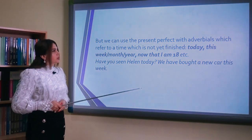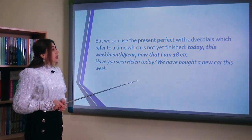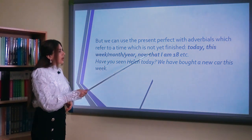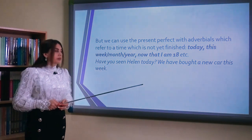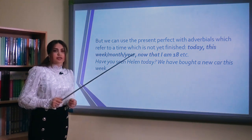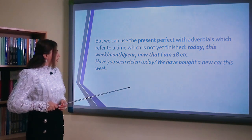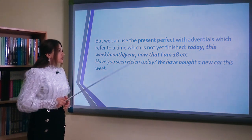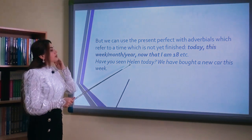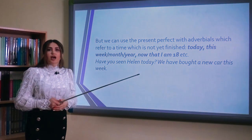But we can use the present perfect with adverbials which refer to a time which is not yet finished: today, this week, this month, this year, now that I am 18, etc. Bu zaman zərfləri ilə indiki bitmiş zaman işlədə bilərik. Məsələn: Have you seen Helen today? We have bought a new car this week. Sən Helen-i bugün görmüsənmi? Yaxud bu həftə biz yeni maşın almışıq.